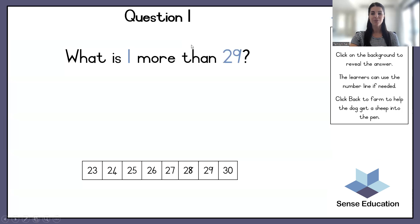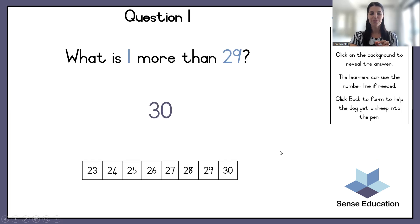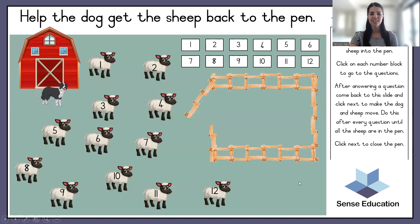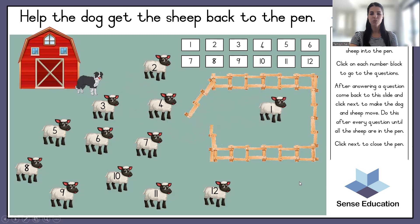Number 1. What is one more than 29? If you are struggling a bit, here is the number line to help you. You can identify where 29 is and then think what is one more. It is 30. Well done! One sheep is into the pen.